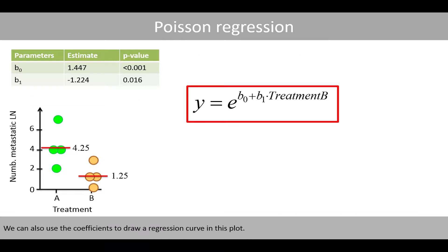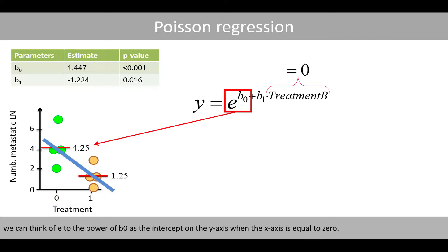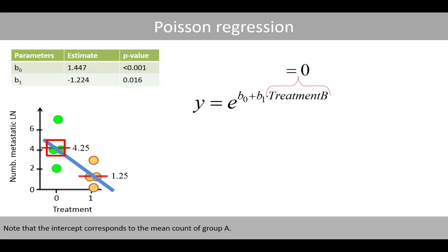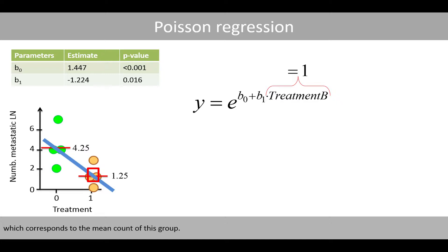We can also use the coefficients to draw a regression curve in this plot. If we define the groups as 0 and 1 on the x-axis, we can think of e to the power of B0 as the intercept on the y-axis when the x-axis is equal to zero. Note that the intercept corresponds to the mean count of group A. In contrast, e to the power of B0 plus B1 results in the expected count for group B, which corresponds to the mean count of that group.